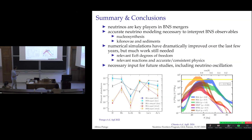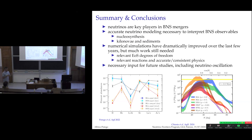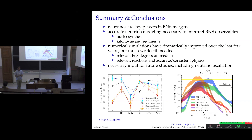In conclusion, I hope I convinced you that neutrinos are a key player in binary neutron star mergers and that increasingly accurate modeling is mandatory. I showed that this is important for nucleosynthesis in the context of both kilonovae and deep-sea sediment observations. Numerical simulations have dramatically improved, and neutrino transport is now in very good shape. The next task for the community is to improve the collision integral — there is missing physics and possibly missing reactions. This is also necessary input for neutrino oscillation studies, where the geometry and energy distribution here may be very different from the core-collapse case.